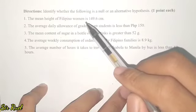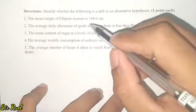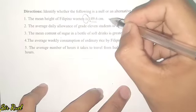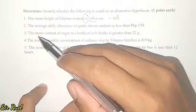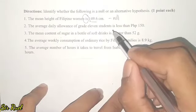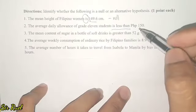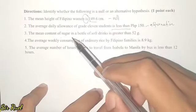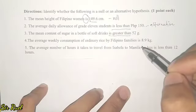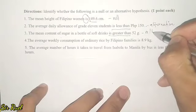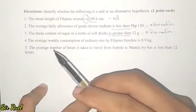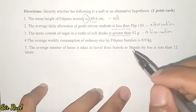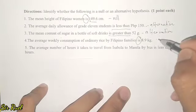Number 1: The mean height of Filipino women is 149.6 centimeters. The word 'is' is used, so this is an example of a null hypothesis. Number 2: The average daily allowance of Grade 11 students is less than 150. 'Less than' was used, so this is an alternative hypothesis. Number 3: The mean content of sugar in a bottle of soft drinks is greater than — 'greater than' was used, so this is an alternative hypothesis. Number 4: The average weekly consumption of ordinary rice by Filipino families is 8.9 kilograms. No greater than, less than, or not equal is used, so this is a null hypothesis.